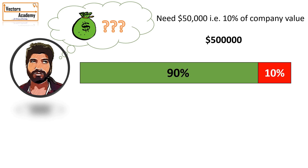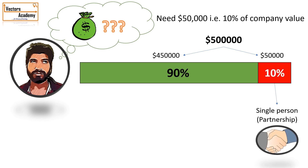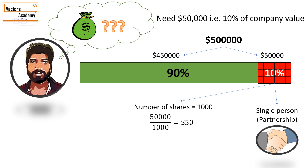The owner decides to sell ten percent of his company to other persons. If he sells it to a single person, that is termed as partnership, with a profit sharing ratio of one to nine. But if he divides that ten percent into different parts, those are called shares. With a thousand shares, fifty thousand divided by one thousand means each share costs fifty dollars — that fifty dollars is called the face value of the share.